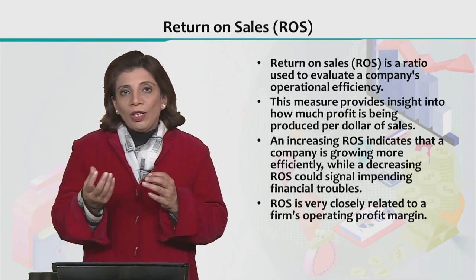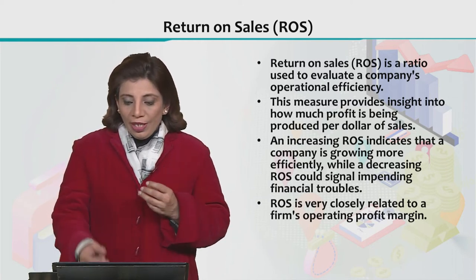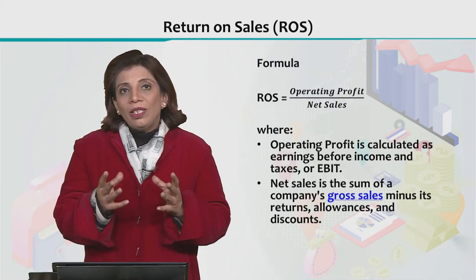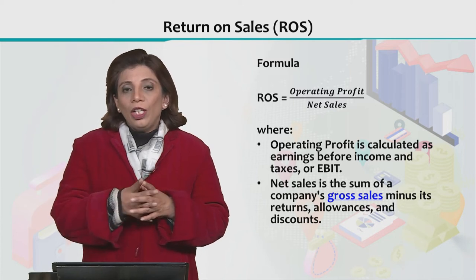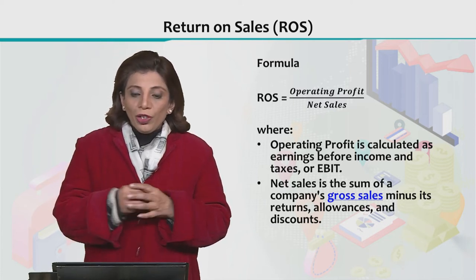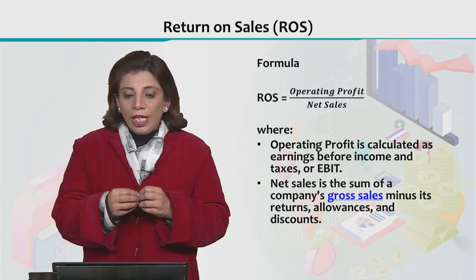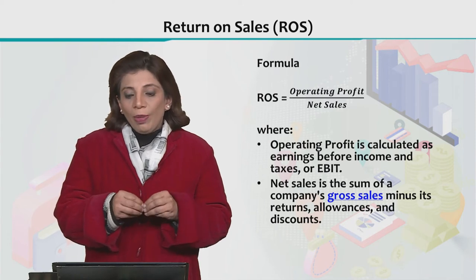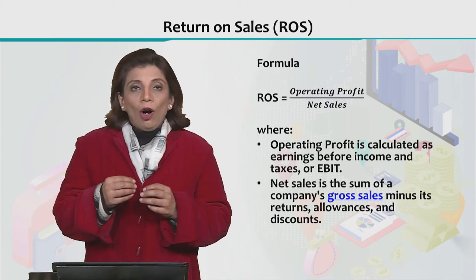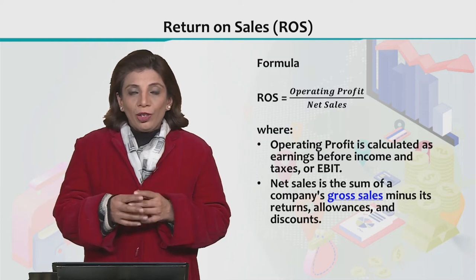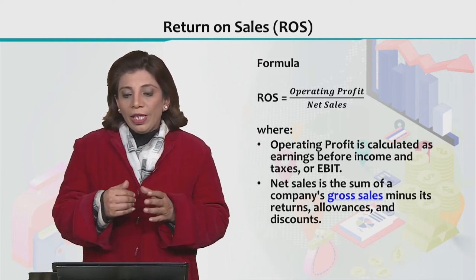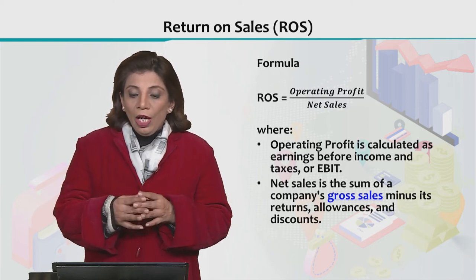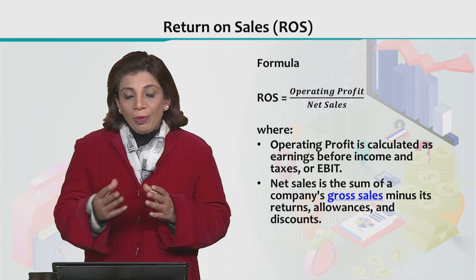In the concept of operating profit margin and ROS there are slight differences. When we want to calculate ROS, it is important to look at the formula: we keep net sales in the denominator and operating profit in the numerator. If we divide the operating profit by net sales, we get the Return on Sales value.